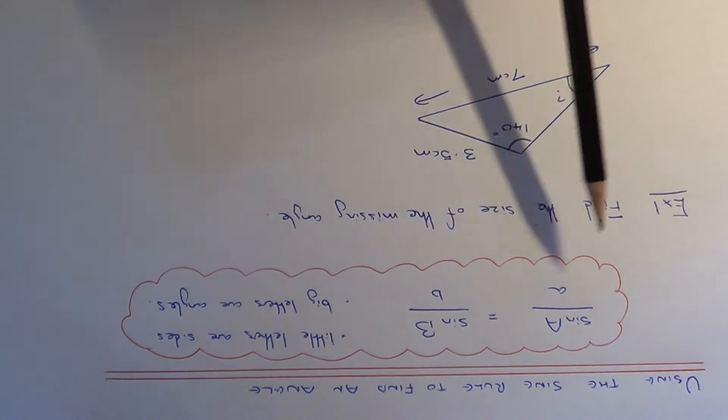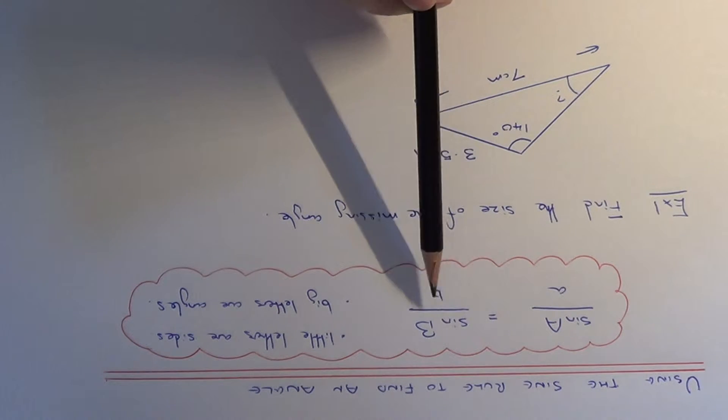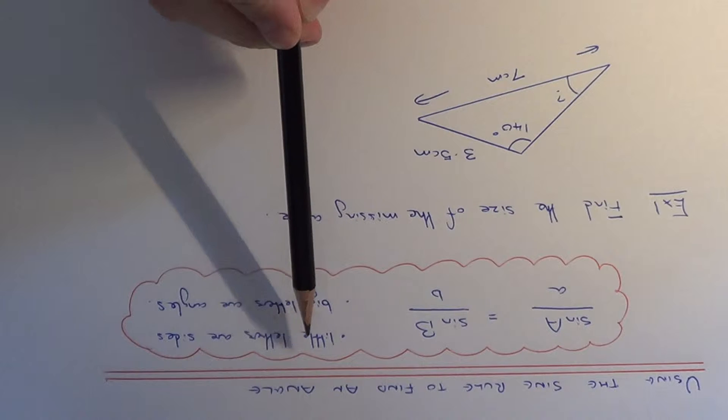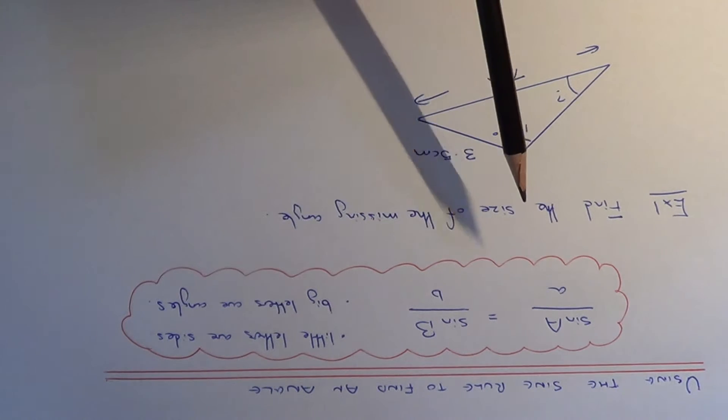The formula we're going to use is sin capital A over little a equals sin capital B over little b, where the little letters are the side lengths and the capital letters are the angles.